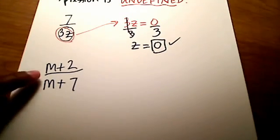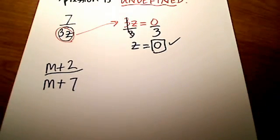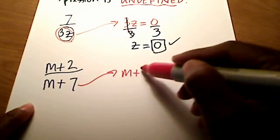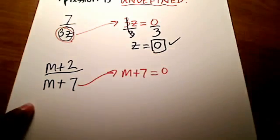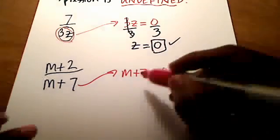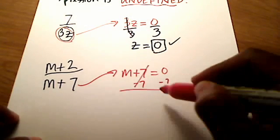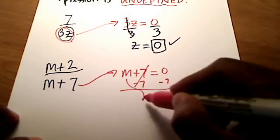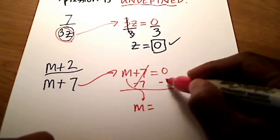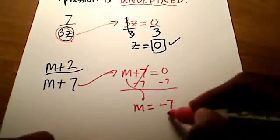Again, once again, I'm going to ignore the numerator, that m plus 2 up top, and I'm only going to focus on the denominator and set it equal to 0 and then solve for m. You would see that I would subtract 7 on both sides. These guys are gone. And I've got m is equal to 0 minus 7 is a negative 7.